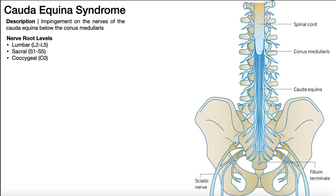Cauda equina syndrome is really just impingement on these nerves of the cauda equina below the conus medullaris. Looking at this anatomy, here at the top we have the spinal cord — this is really the lower thoracic upper lumbar region. You'll notice that as it goes down, it actually terminates. The spinal cord doesn't go all the way down through the lumbar spine into the sacrum. It has a definite endpoint called the conus medullaris that exists really between L1 and L2.